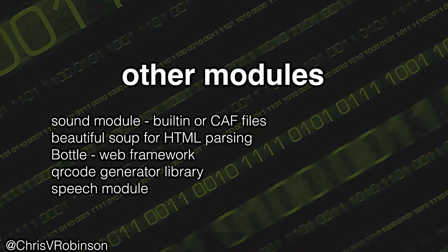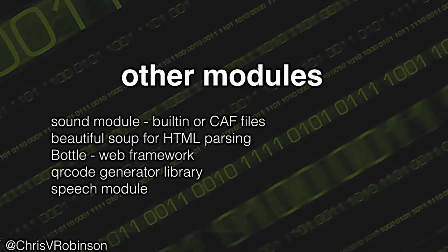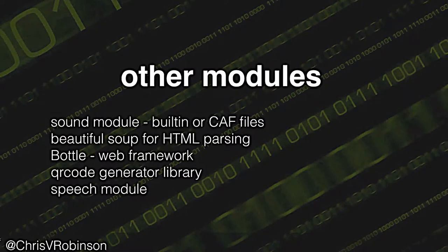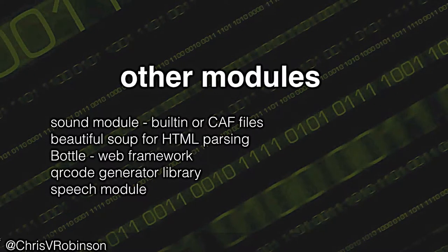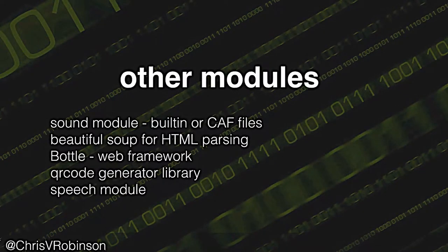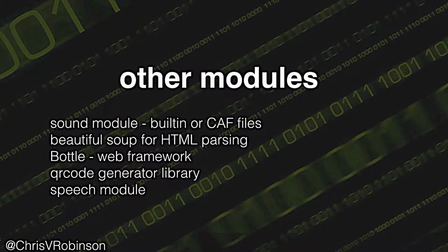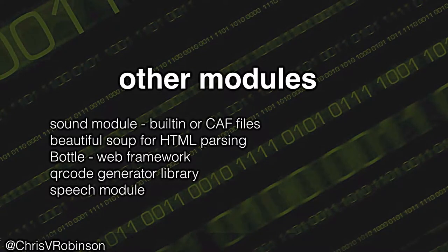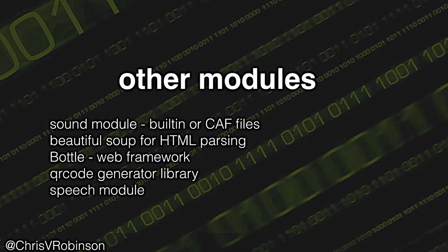There are other modules available too. The sound module — students really enjoy just playing sounds, it's super easy, and it's got a whole bunch of built-ins or they can use their own files. Pythonista comes with a whole bunch of built-in assets: images, sounds, and all sorts of things. One of my students has used Beautiful Soup for HTML work. The QR code generator is really cool because it works purely in Python without going out to the web. The speech module I usually show towards the end of the lesson, as you can imagine.